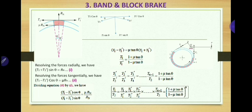To find the overall ratio T1/T2, we multiply all the individual block ratios together: T1/T1' × T1'/T2' × ... × Tn-1/T2 = T1/T2. Therefore T1/T2 = [(1 + μ tan θ)/(1 - μ tan θ)]^n, raised to the power n, where n is the number of blocks. This is the key equation for band and block brake analysis.